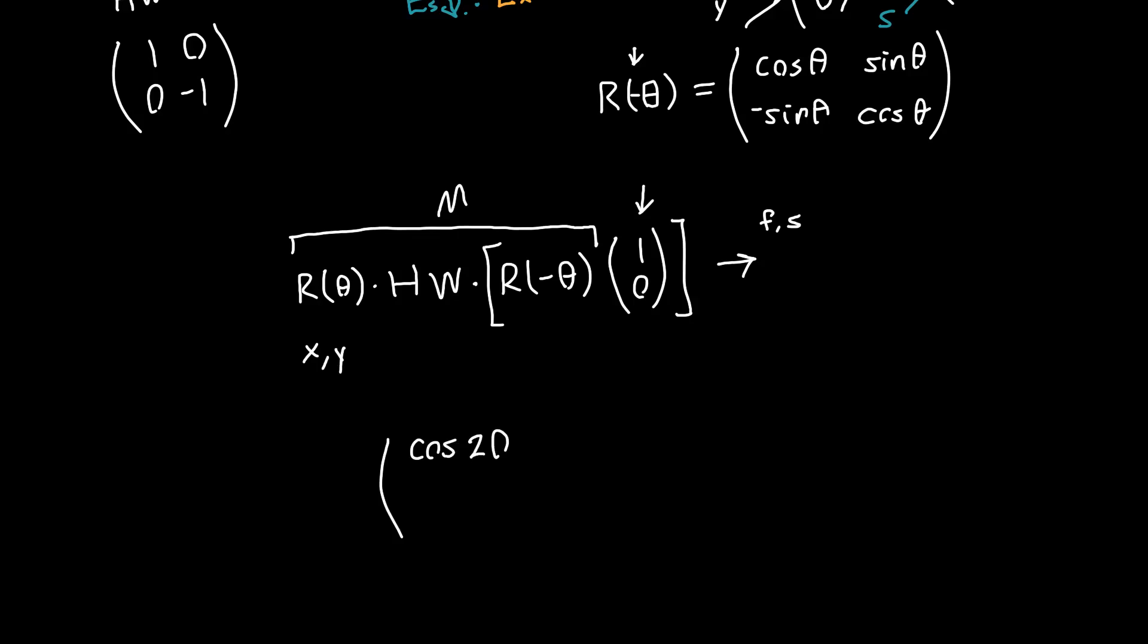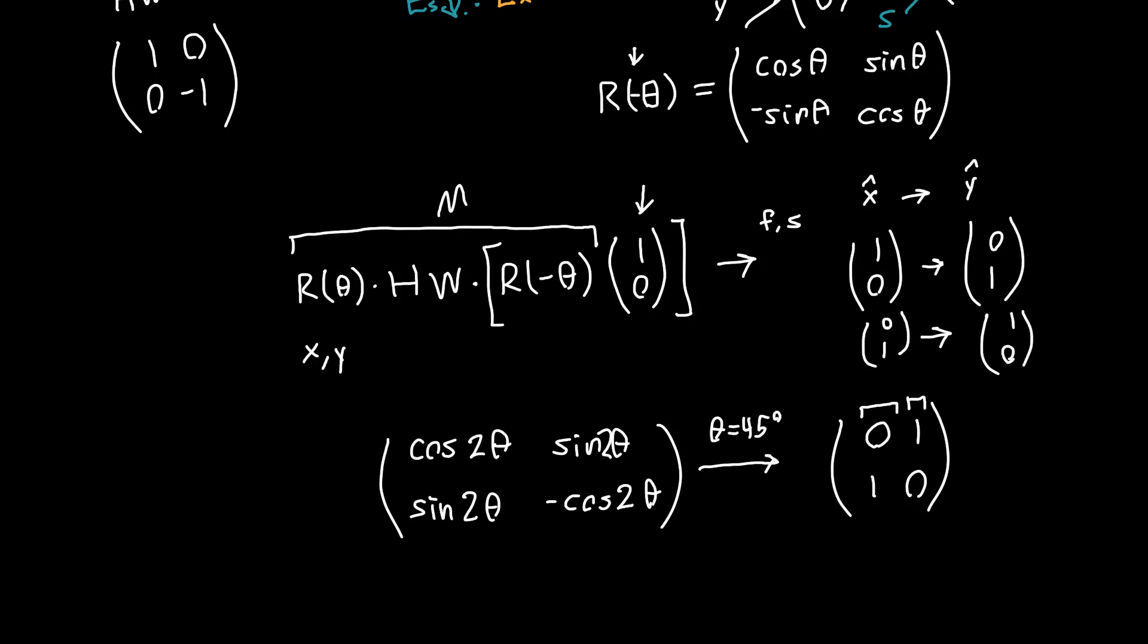It's cosine of two theta, sine of two theta, sine two theta, minus cosine two theta. And now here's something really interesting. If you plug in theta equals 45 degrees to this matrix, what you get is 0, 1, 1, 0. So if we look at the first column vector, this matrix is taking one zero light and turning it into 01 light. So we had x polarized light, and it becomes y polarized. Similarly, if we had y polarized light, or our vector 01, that turns into x polarized light, one zero.